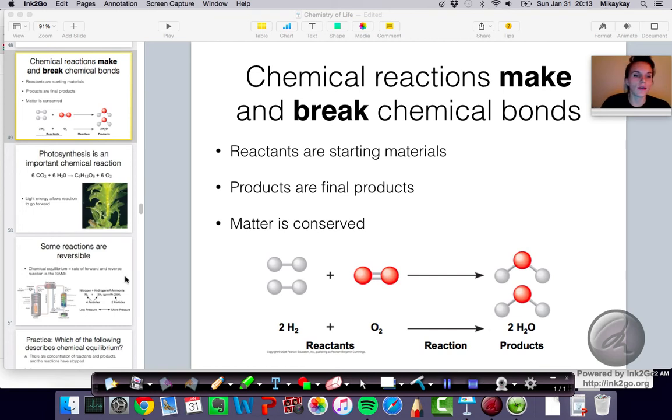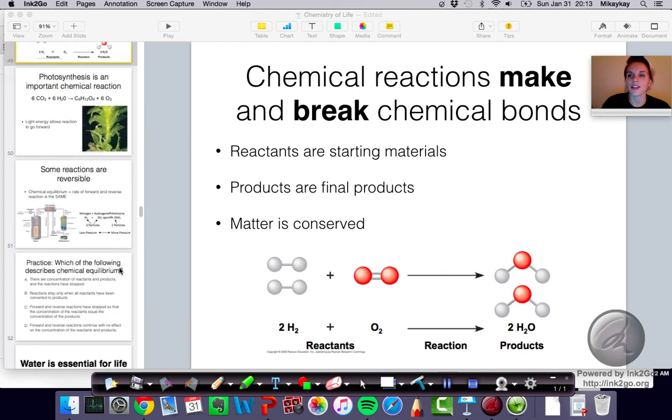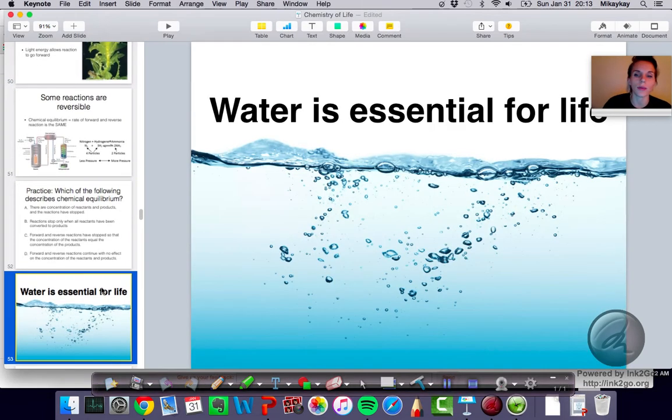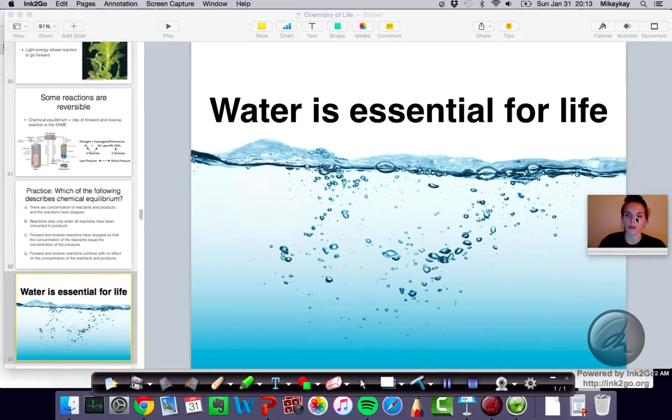All right, here we are for the next section of our AP Biology lessons, and this one is all about water. This first video is going to be pretty quick because it's just the first section in your textbook, and it talks generally about water. So this is section 3.1. Water is a very important substance for life, and it is because of water and the properties that water has that allows life to exist on earth the way that it does.